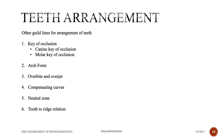Arch form can be U-shaped or V-shaped. If both arches are U-shaped or both V-shaped there are no problems, but if the upper is U and the lower is V, you may encounter crossbites or difficulty achieving ideal arrangement, requiring case-by-case adjustments. Overbite and overjet: always maintain 2 mm overbite and 2 mm overjet when arranging teeth.